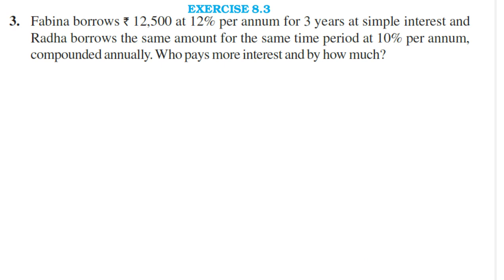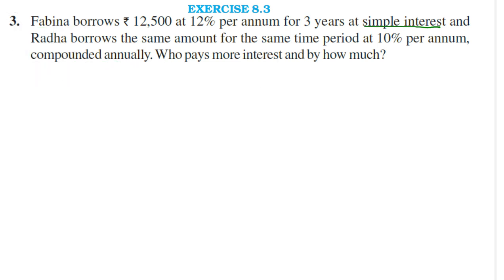Let us go to the next question. Problem number 3. Fabina borrows Rs. 12,500 at 12% per annum for 3 years at simple interest, and Radha borrows the same amount for the same time period at 10% per annum compounded annually. Who pays more interest and by how much? Here two people, Fabina and Radha, both borrowed money. Fabina borrowed at simple interest whereas Radha borrowed at compound interest. Let us calculate the interest each has to pay.